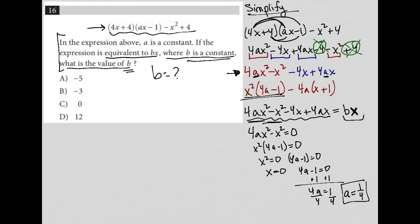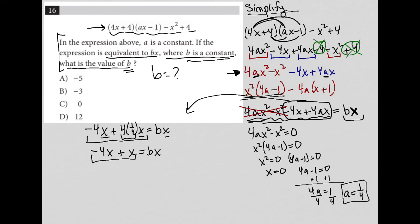Now, that's very valuable. If a equals 1 fourth, first of all, all of this is now gone - 4ax squared minus x squared is now gone. And second of all, the remaining portion here on the left-hand side becomes negative 4x plus 4a, but I know that a is 1 fourth, x equals bx. Now, you can see the whole purpose of what I was doing - on both sides, the only variable that I have is x. But I can simplify this left-hand side further because I have negative 4x. 4 times 1 fourth is just 1, so 1 times x is just x. So I have negative 4x plus x equals bx. Negative 4x plus x is negative 3x, so negative 3x equals bx. And obviously, we divide both sides by x. B is equal to negative 3, and the answer is choice B.